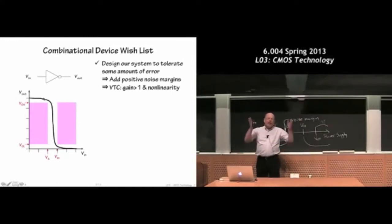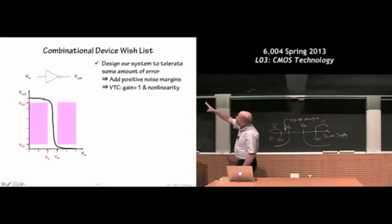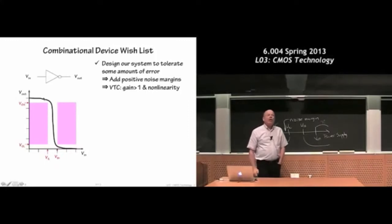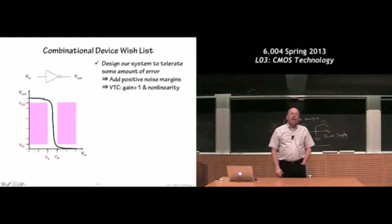The fact that the middle region between VIL and VIH on the x-axis is narrower than it is tall is because we had positive noise margins. It's the noise margins that allow our devices to work reliably in a whole range of environments.